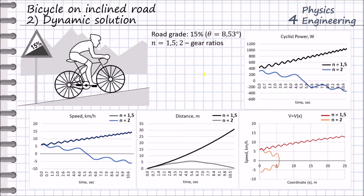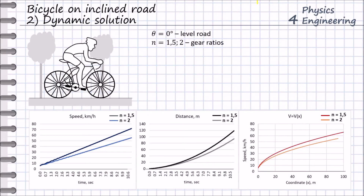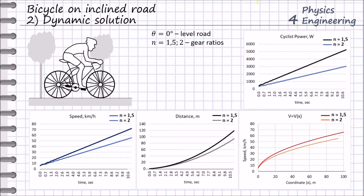Therefore the next step is to consider different resistances to make the running condition closer to reality. With no resistance and no power limit, the cyclist can run over the hill on the first gear but cannot on the second gear. When we check the level road, we see that the cyclist's velocity is continuously increasing up to 70 kph in 10 seconds, which is of course not realistic. The same unrealistic situation happens with the power output.